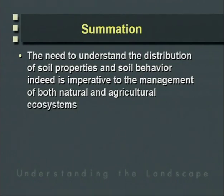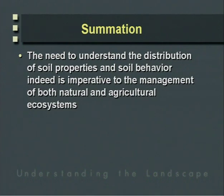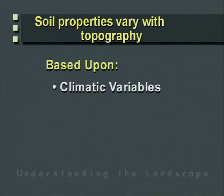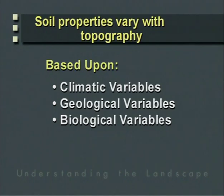In summary, the need to understand the distribution of soil properties and soil behavior is imperative to the management of both natural and agricultural systems. Landscape units display systematic variations in soil properties as a function of relief, modifying other soil-forming processes. As a pedologist, we try to relate soil-forming factors to soil-forming processes to soil properties — factors condition processes, which result in unique properties. Topographic variations have a profound influence on soil properties, and that influence varies as a function of other conditioning variables including climatic, geological, and biological variables.